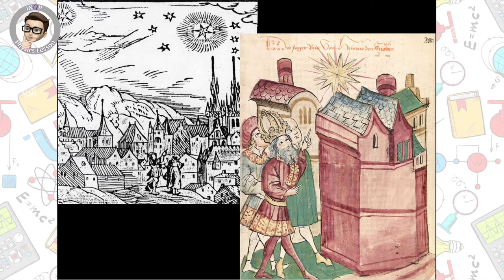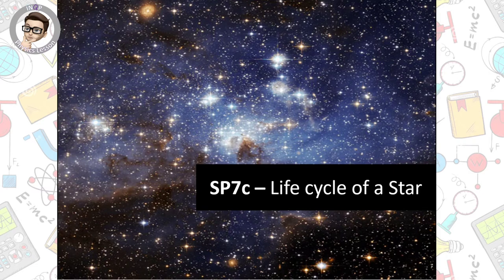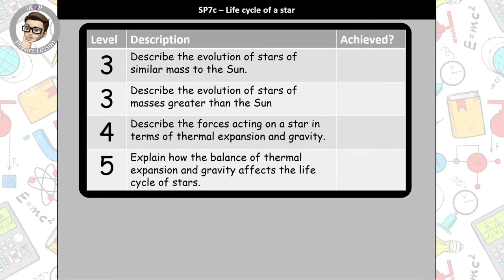In this session we're going to explain and explore it — it's all about the life cycle of a star. We need to cover four things: describe the evolution of stars with similar mass to the sun, describe the evolution of stars with masses greater than the sun, talk about the forces acting on a star, and explain how the balance of these forces affects the life cycle. Have a pencil and ruler ready — this is a flowchart-style lesson.